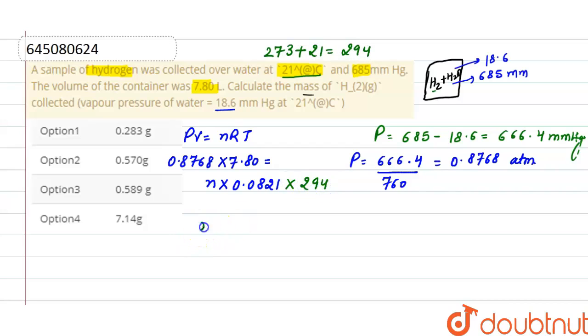From here, the number of moles after solving it will be 0.2833. So these are the number of moles, and as we know, number of moles is equals to mass divided by molecular mass.